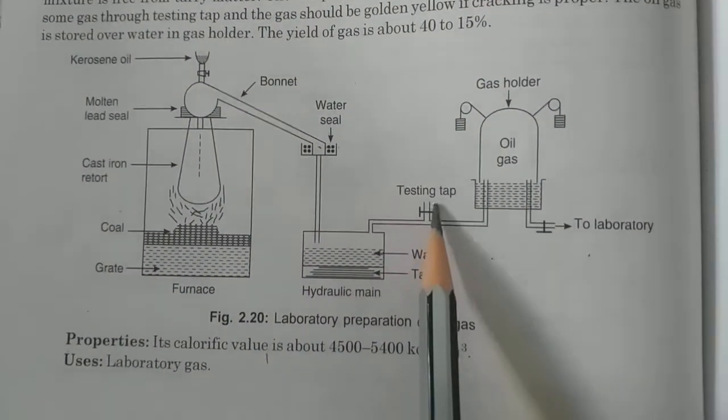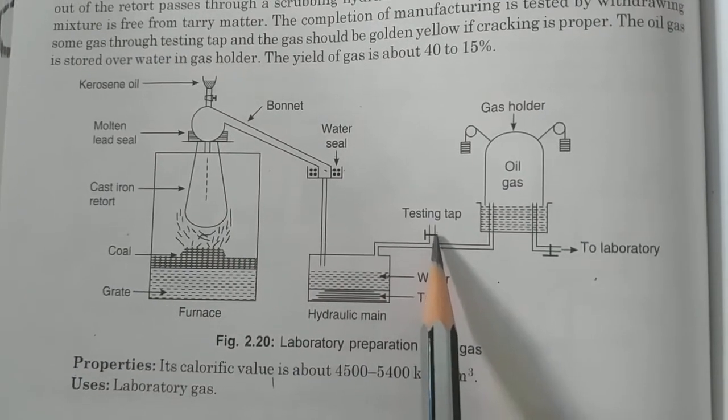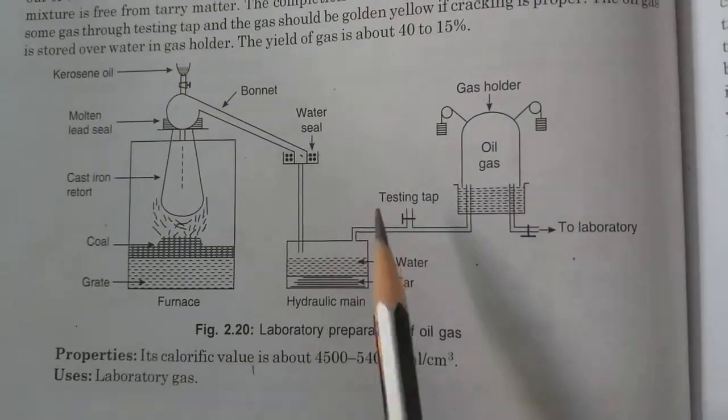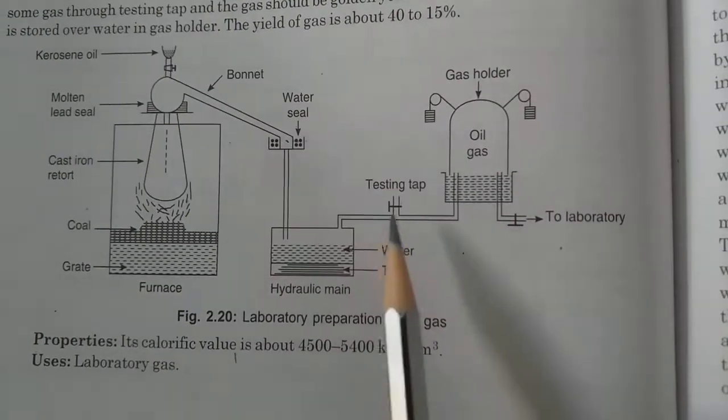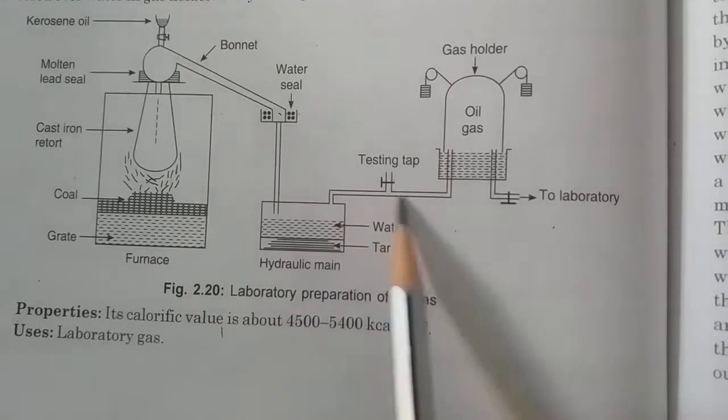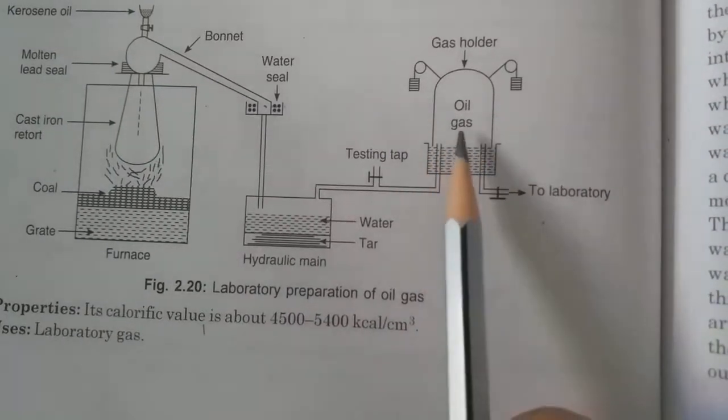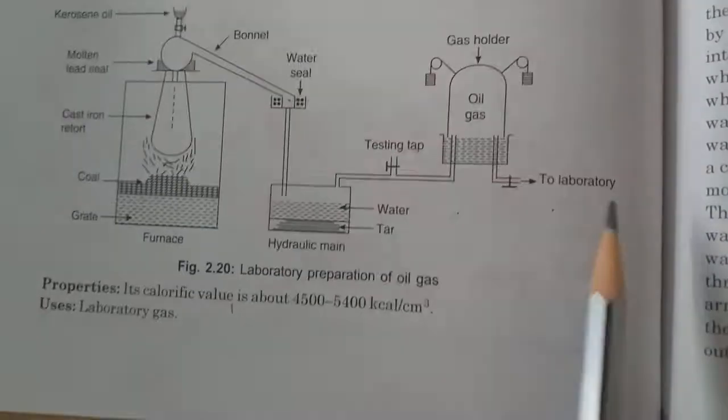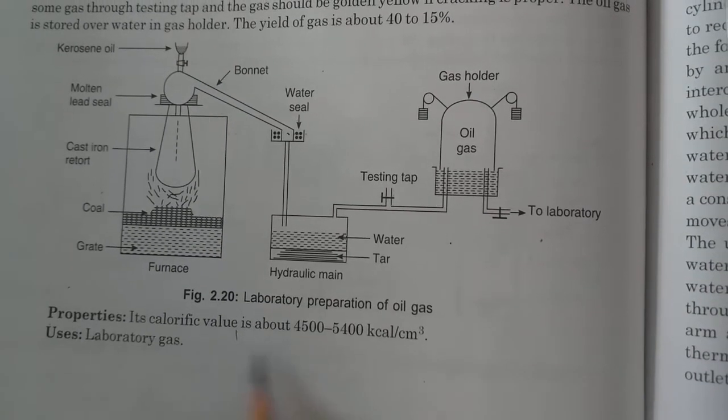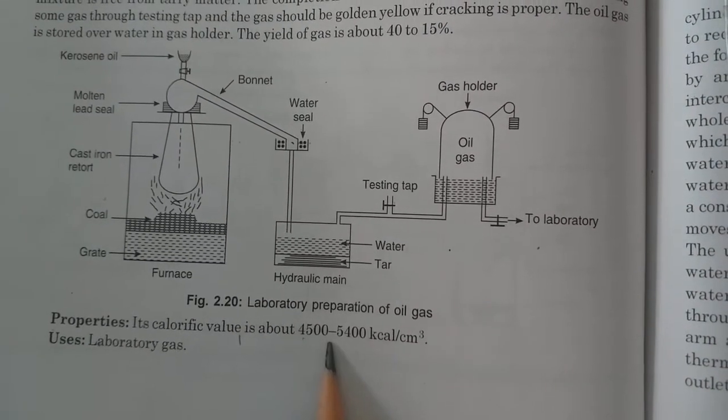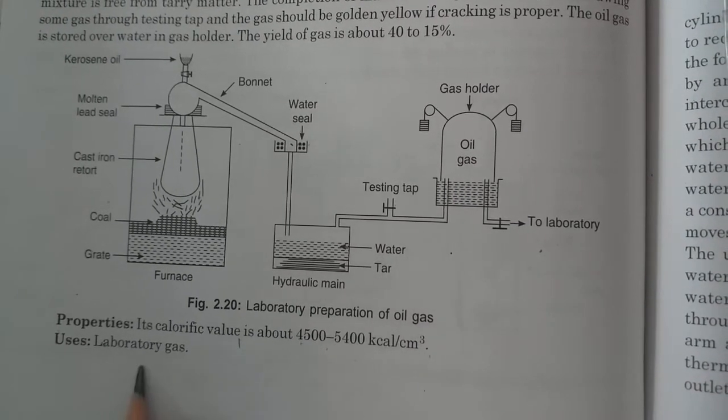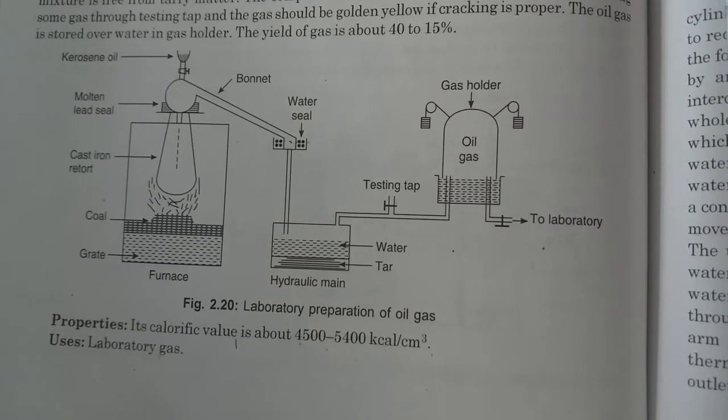This testing tap is used for testing the gas to check if the gas is prepared correctly. The characteristic of this oil gas is that it is golden yellow in color. After testing, it is collected in the gas jar by water displacement method, and maybe it is directly used in the laboratory. That's why it is also called lab gas. The calorific value of the gas is 4500 to 5400 kilocalorie per meter cube. Uses: it is used as a laboratory gas. Thank you.